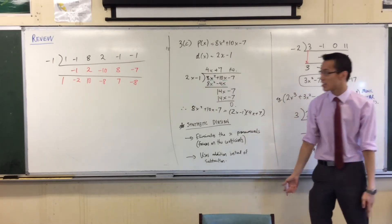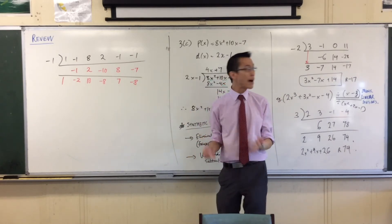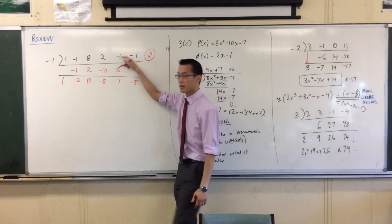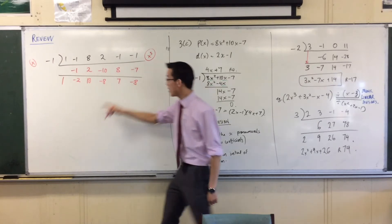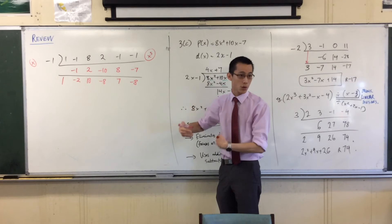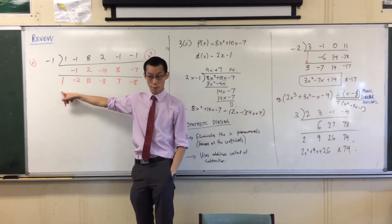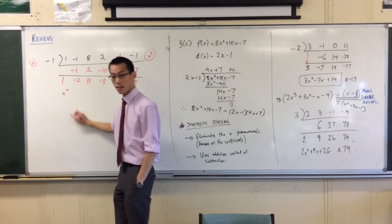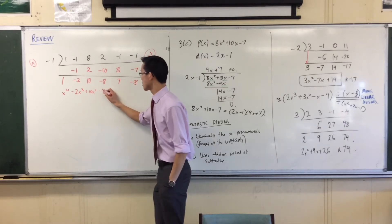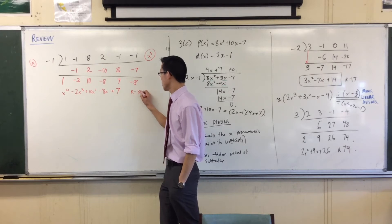Now all I need to do is translate it back. This represents a polynomial with a remainder at the end. I was dividing by something — the dividend was degree five, the divisor was degree one, so my quotient should be degree four; it always just goes down one. So this first number is the coefficient of X to the four, then X cubed, then X squared, then X, and that last constant — and the final value is my remainder.